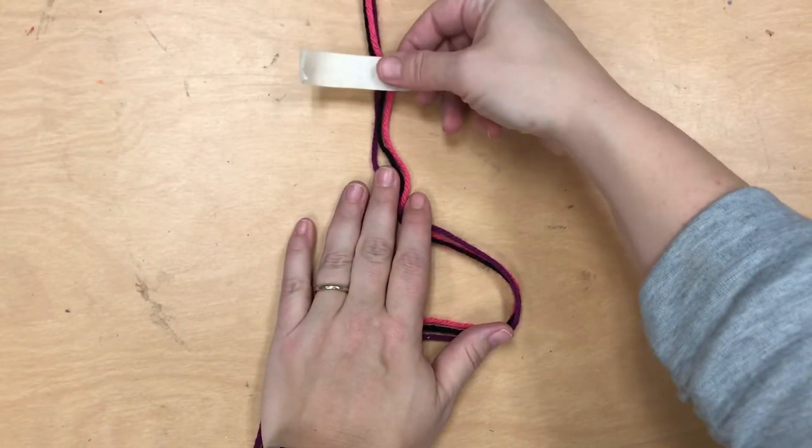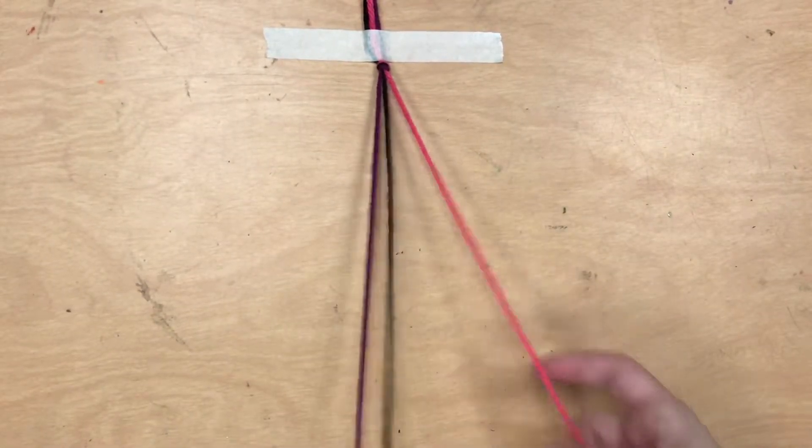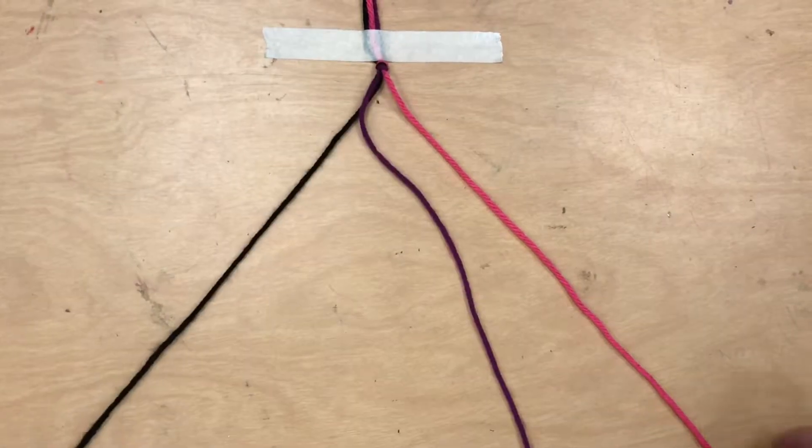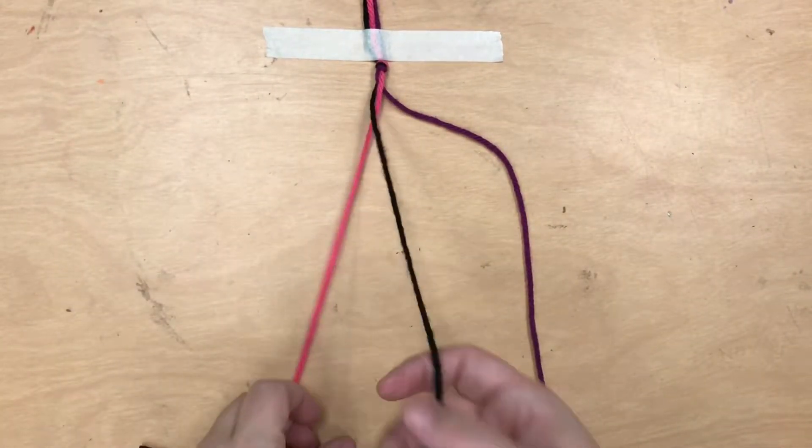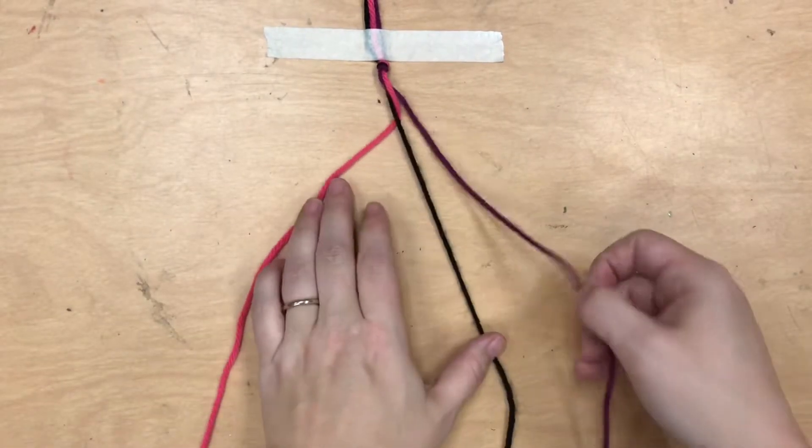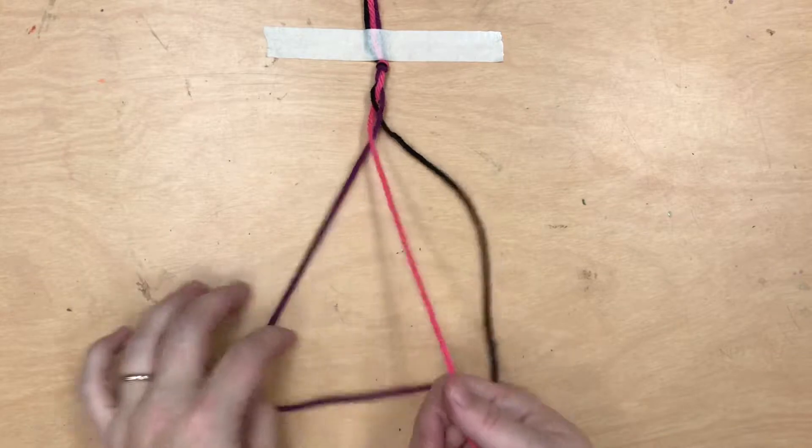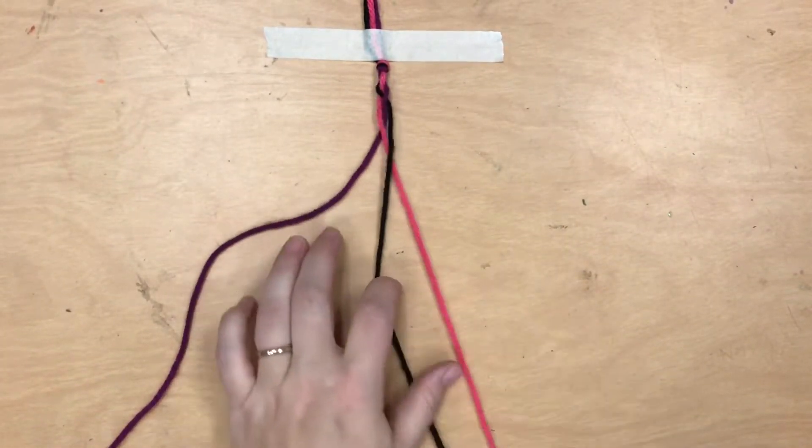With this braid I wanted to tape it down to the table temporarily so that I could focus on braiding the yarn, starting at the left and putting that over the center. Then on the right I put that over the center, and you basically go left over the middle and right over the middle back and forth. Left over the middle and then right over the middle.